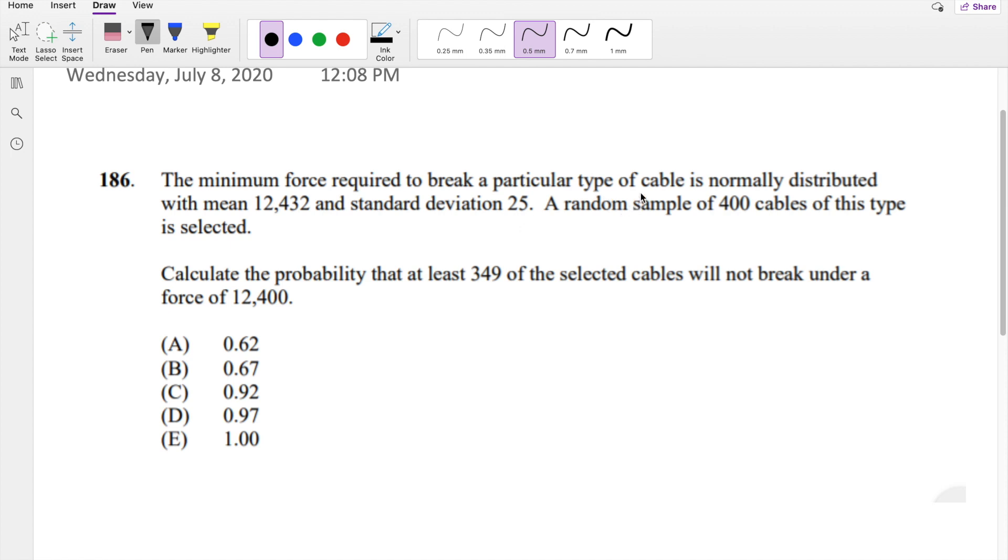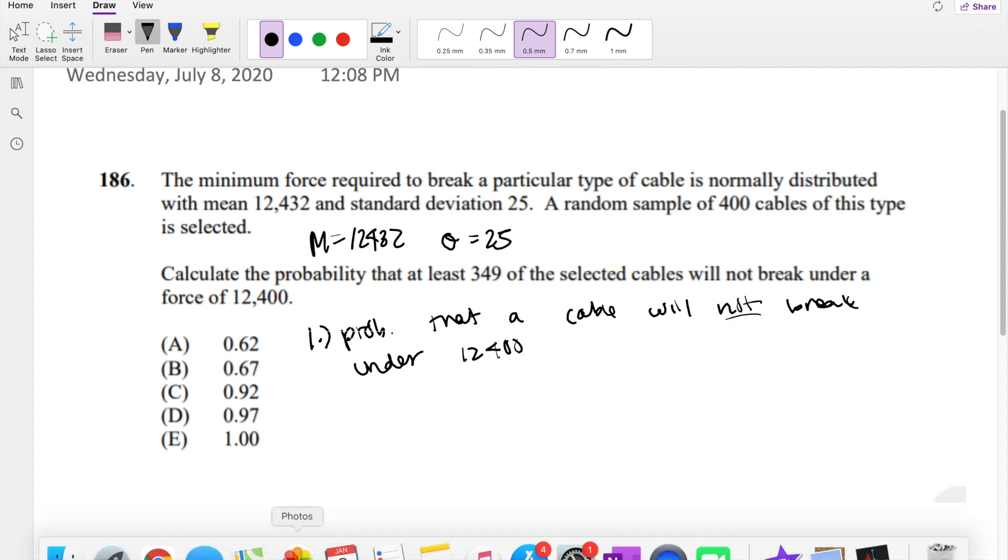So basically, a cable is normally distributed with a mean of 12,432 and a standard deviation of 25. This is a two-step problem. First we have to figure out the probability that a cable will not break under this force, 12,400. So that's step one.